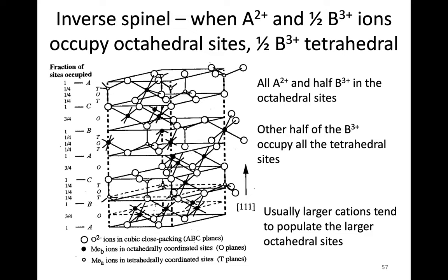All of these are a result of the relative sizes of those cations. Octahedral sites tend to be larger sites, and larger cations tend to occupy the larger octahedral sites. In this case, the A site is relatively large, larger than in the normal case, because octahedral sites are bigger. The bigger ones go there, and then the rest of the B sites are tetrahedral.